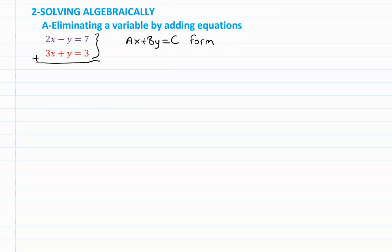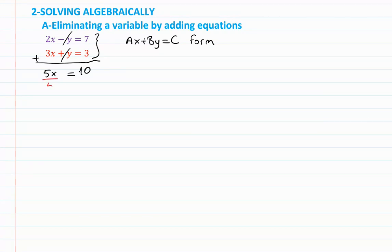When I add the two equations, 3x plus 2x gives 5x, and negative y plus y gives 0. So 5x equals 10. Dividing both sides by 5, x equals 2.